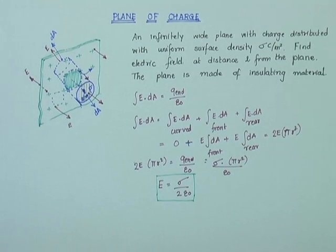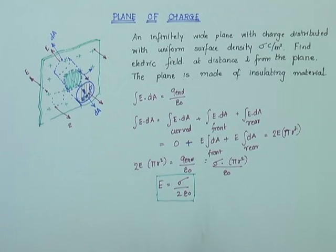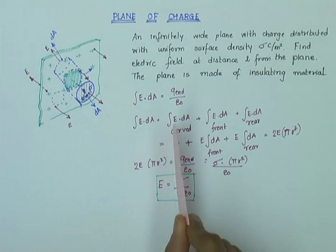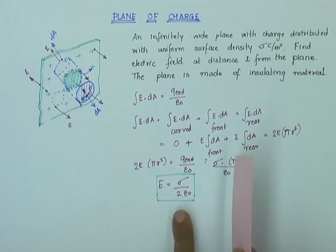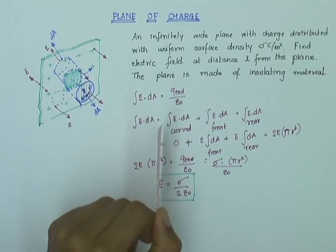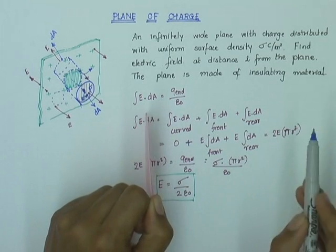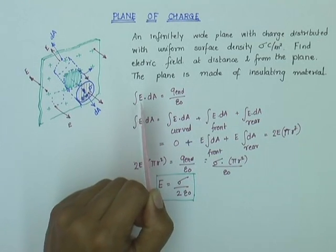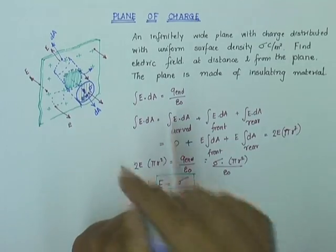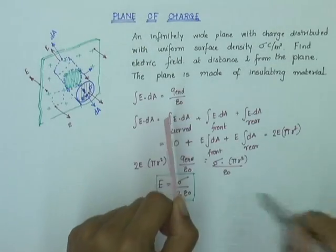The second thing to notice is that E depends only on the charge density sigma and 2 epsilon zero, which is a constant. E does not depend on the distance of point P from the plane. So if I have a plane surface, E at any point is given by sigma over 2 epsilon zero — whether that point lies close to the plane or quite far away. E is essentially uniform on both sides of the plane, up to infinity.